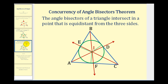We'll finish by talking about the Concurrency of Angle Bisectors Theorem, which states that the angle bisectors of a triangle intersect in a point that is equidistant from the three sides. We already stated this, but it's often also stated as a theorem. And again, the most important thing to remember is that the distance from the incenter to the sides would be the length of a perpendicular segment, not the length of the angle bisectors.